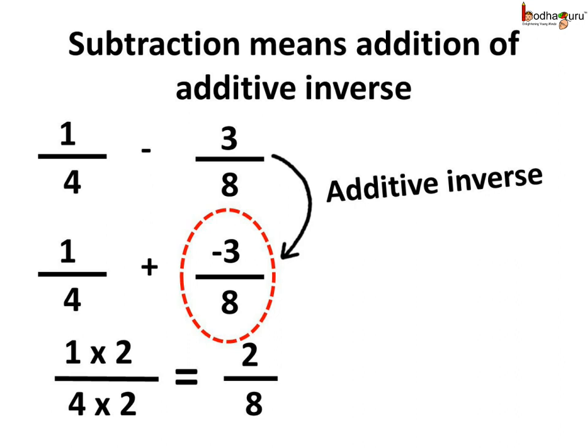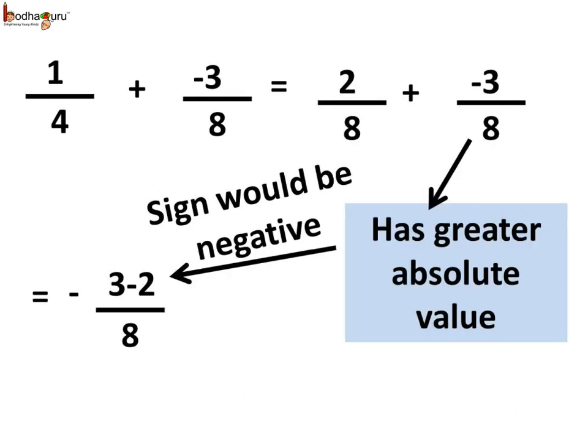For example, 1/4 minus 3/8. The additive inverse of 3/8 is minus 3/8. So we would add minus 3/8 to 1/4. The LCM of 4 and 8 is 8. We multiply both the numerator and the denominator of 1/4 by 2 to get 2/8. Thus, we need to add 2/8 and minus 3/8.